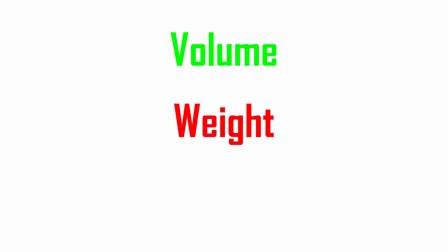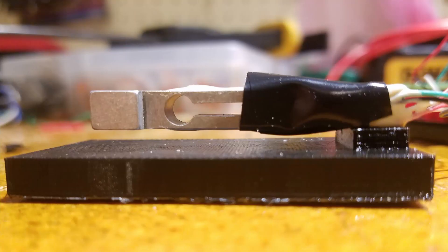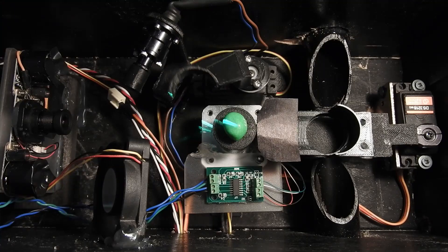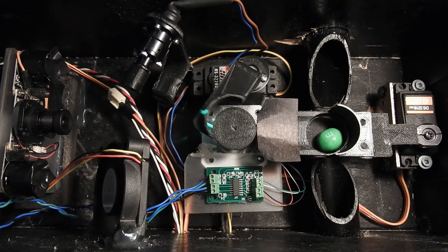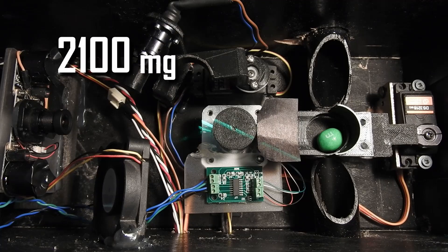Now that we can finally measure the volume of our M&M, we still need to measure its weight. The weight differences between M&Ms are quite small, so a bathroom scale wasn't going to cut it. Instead, I built a custom scale using one of these 100g load cells. After the scanning process is complete, a servo sweeps the M&M off the rotating platform and onto the scale. Once the M&M's weight has been recorded, we have everything we need to calculate its density.